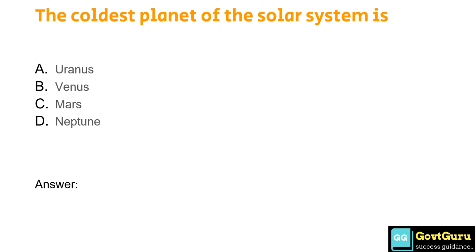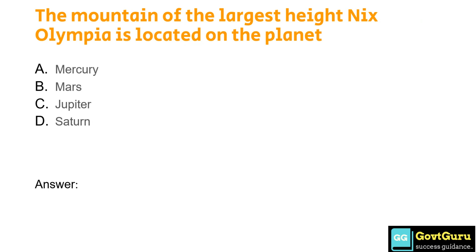The coldest planet of the solar system is: Option A: Uranus, Option B: Venus, Option C: Mars, Option D: Neptune. The answer is Option D, Neptune. The mountain of the largest height, Nix Olympia, is located on the planet: Option A: Mercury, Option B: Mars, Option C: Jupiter, Option D: Saturn. The answer is Option B, Mars.